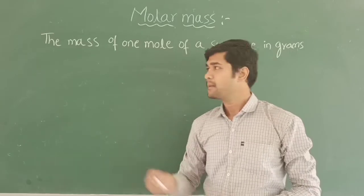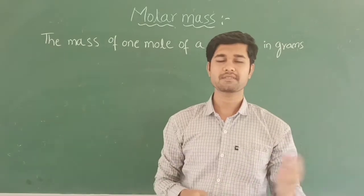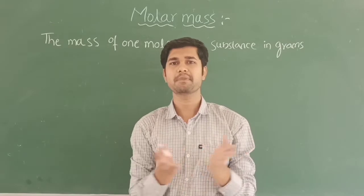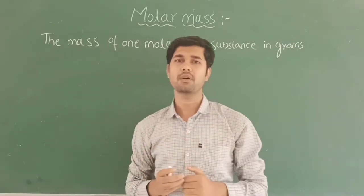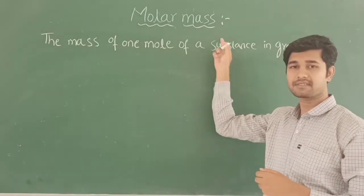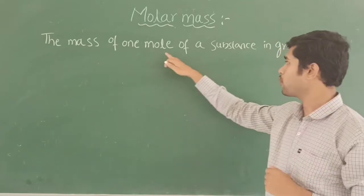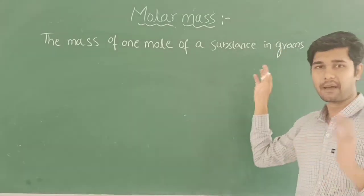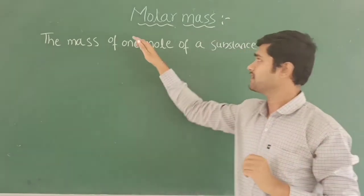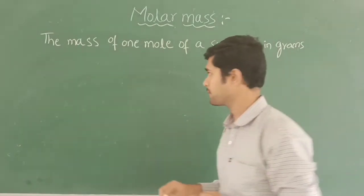Let us discuss the molar mass concept. We have already studied atomic mass and molecular mass. Atomic mass is simply the mass of an atom, and molecular mass is simply the mass of a molecule. Molar mass is defined as the mass of one mole of a substance in grams. That is the difference between molar mass and atomic mass and molecular mass. Let us see one example.